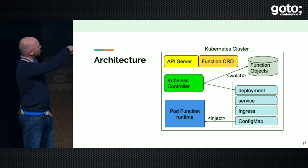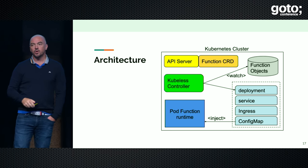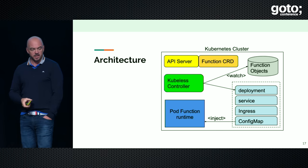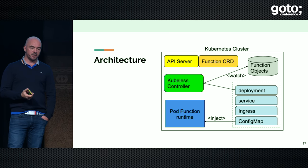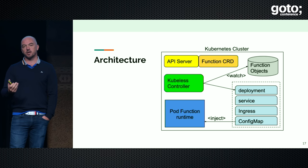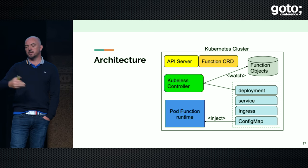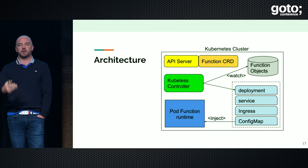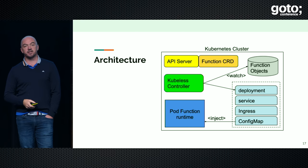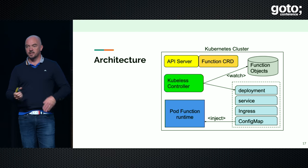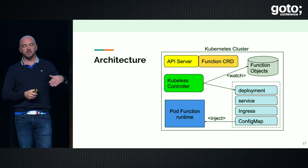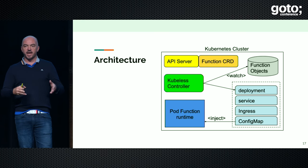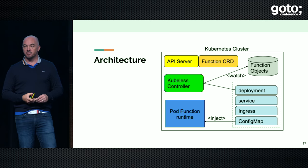The overall architecture at the beginning: we extended the API server of Kubernetes with a custom resource definition — a CRD. Using a CRD, we defined a function object. Then we wrote a controller that watches an API endpoint. When it sees a function object, it creates a Kubernetes deployment. A container starts, the function code gets injected inside that container, and suddenly you have your function up and running. Deployment, service, ingress, config map — all those are Kubernetes objects. This means you can have YAML or JSON manifests that represent your function in a very declarative manner.